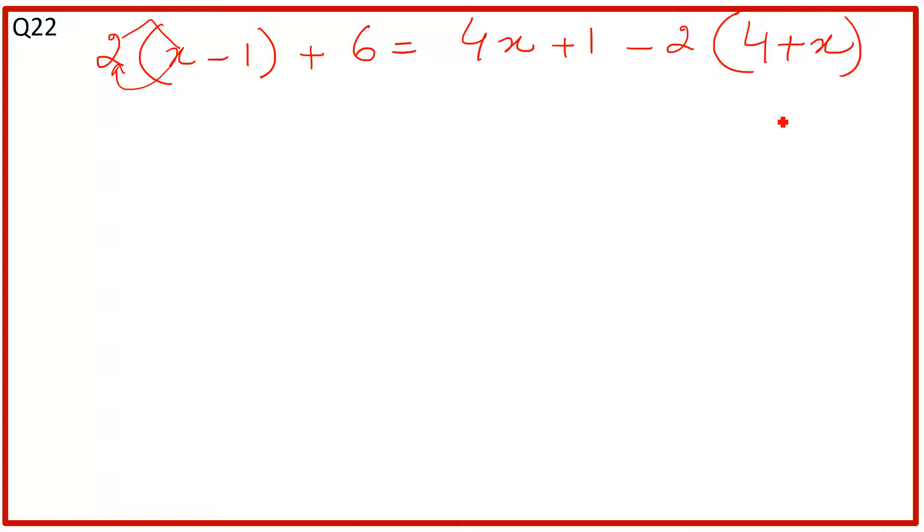So 2 multiplied by x equals 2x, 2 times negative 1 is negative 2, plus 6, which equals 4x plus 1 on the right side.